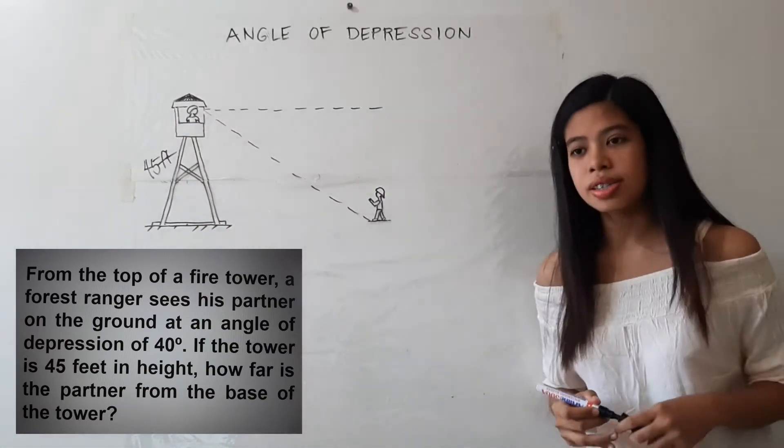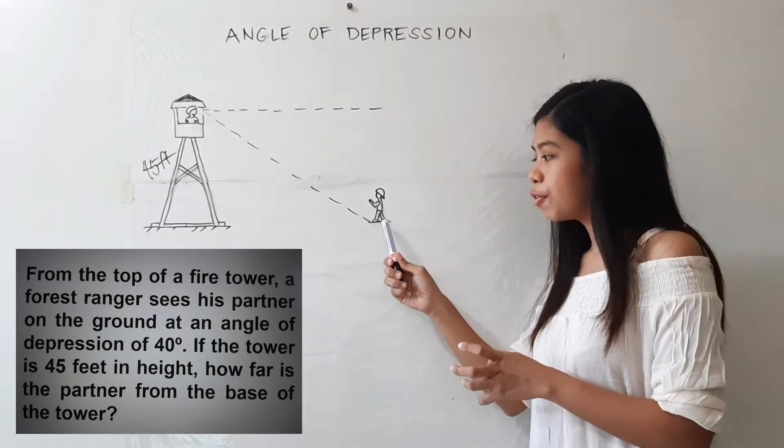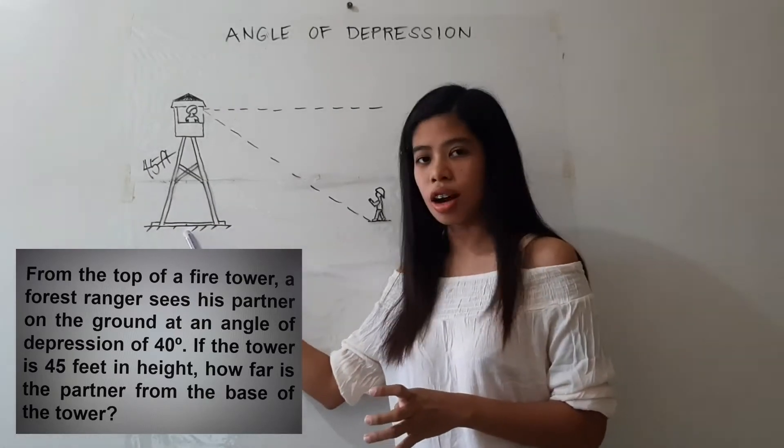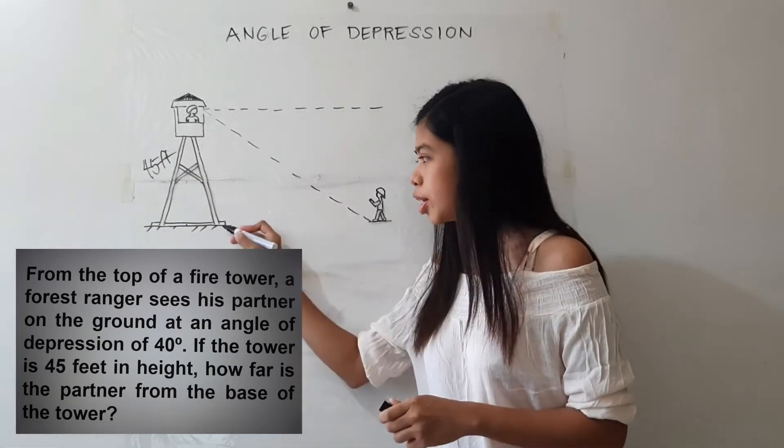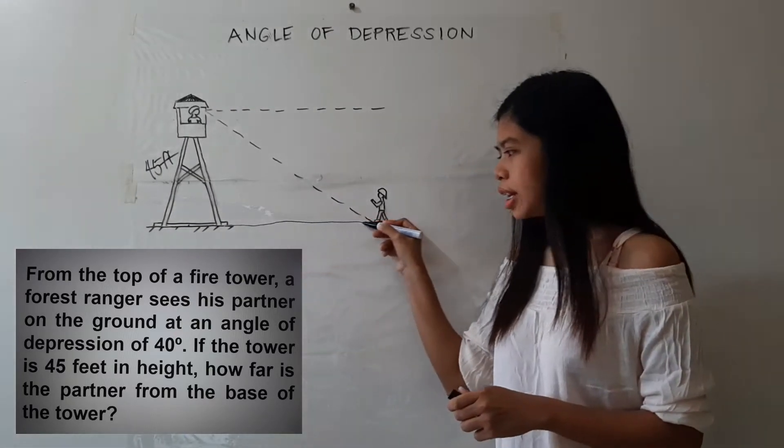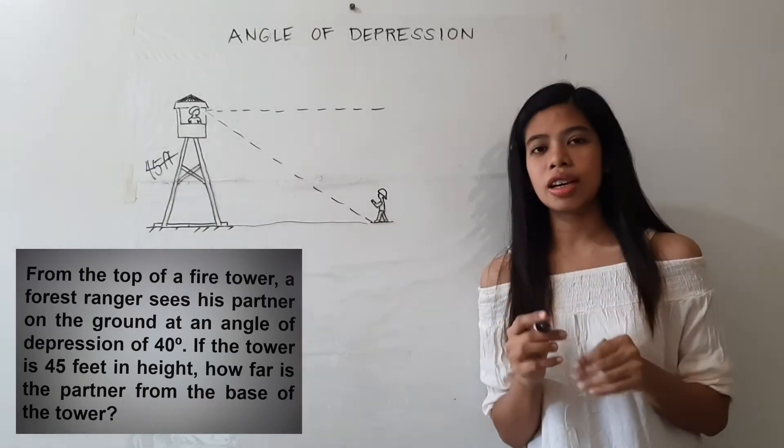How far is a partner from the base of the tower? So we are looking for this side. Now, where can we locate the angle of depression?